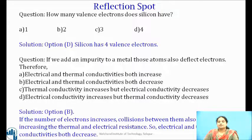And for the second question, as addition of impurity increases the number of electrons, so the collisions between them will also increase, which leads to the increase in thermal and electrical resistance. Therefore, electrical and thermal conductivities both decrease. That's why option B is correct.